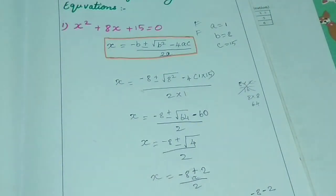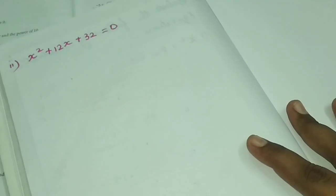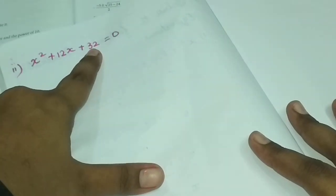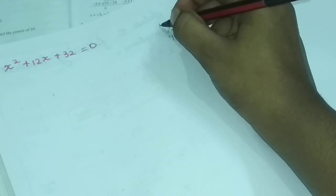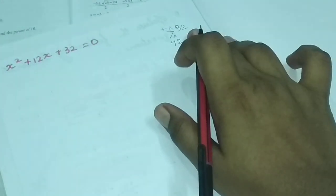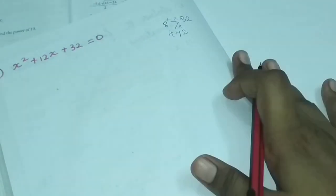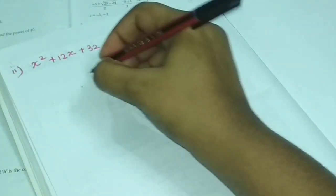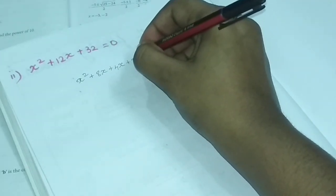Now the factorization method is the second method. We need to split the middle term. We use the 8 table: 8 times 4 is 32, and 8 plus 4 is 12. So we split 8x as: x squared plus 8x plus 4x plus 32 is equal to 0.